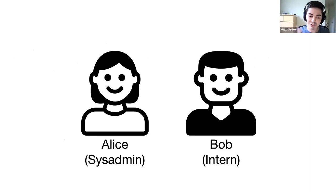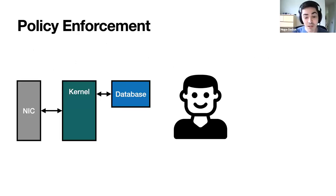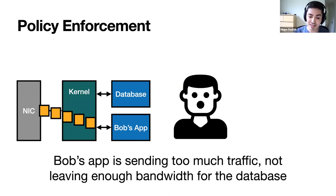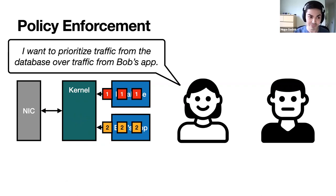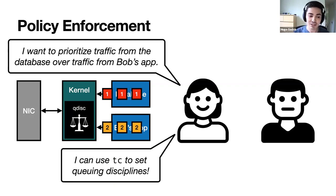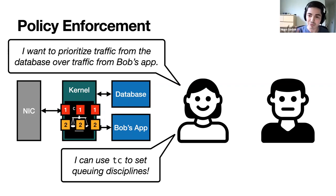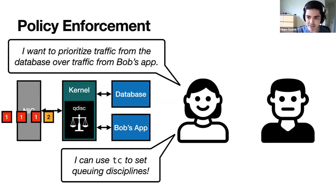To illustrate why this is the case, I'm going to show you some examples using Alice, who is a system administrator, and Bob, who is a newly hired intern. Bob is quite happy — he just deployed his first application to production. The problem is that soon after, he realizes his application is sending too much traffic and not leaving enough bandwidth for the database running on the same server. Alice knows what she has to do: she can use tools like TC to set queuing disciplines inside the kernel. And because the kernel can oversee traffic from all applications, it is able to enforce arbitrary queuing disciplines — in this example, prioritizing traffic from the database over Bob's application.